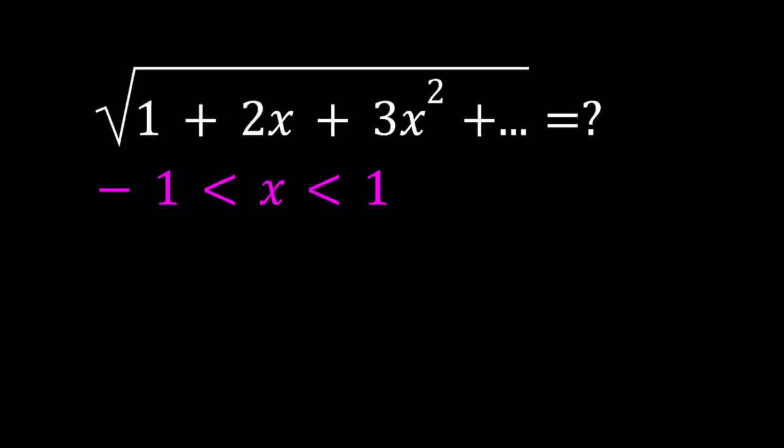Notice here that the power of x is 1 less than the coefficient that multiplies it. I'm going to be presenting two methods. Let's start with the first one.